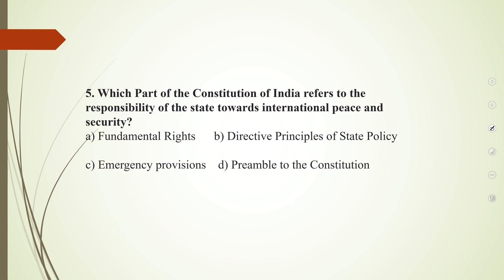The next question is: which part of the Constitution of India refers to the responsibility of the state towards international peace and security? We already analyzed Article 51 earlier. This does not fall under fundamental rights, emergency provisions, or the Preamble. The answer is B — Directive Principles of State Policy, specifically Article 51, which talks about international peace and security.